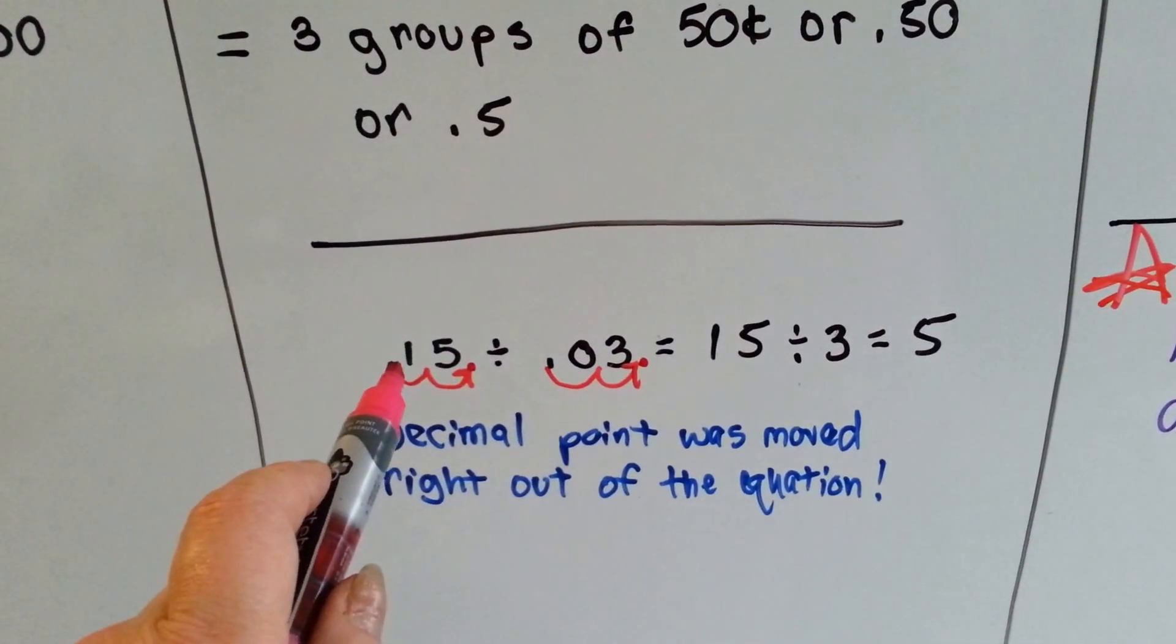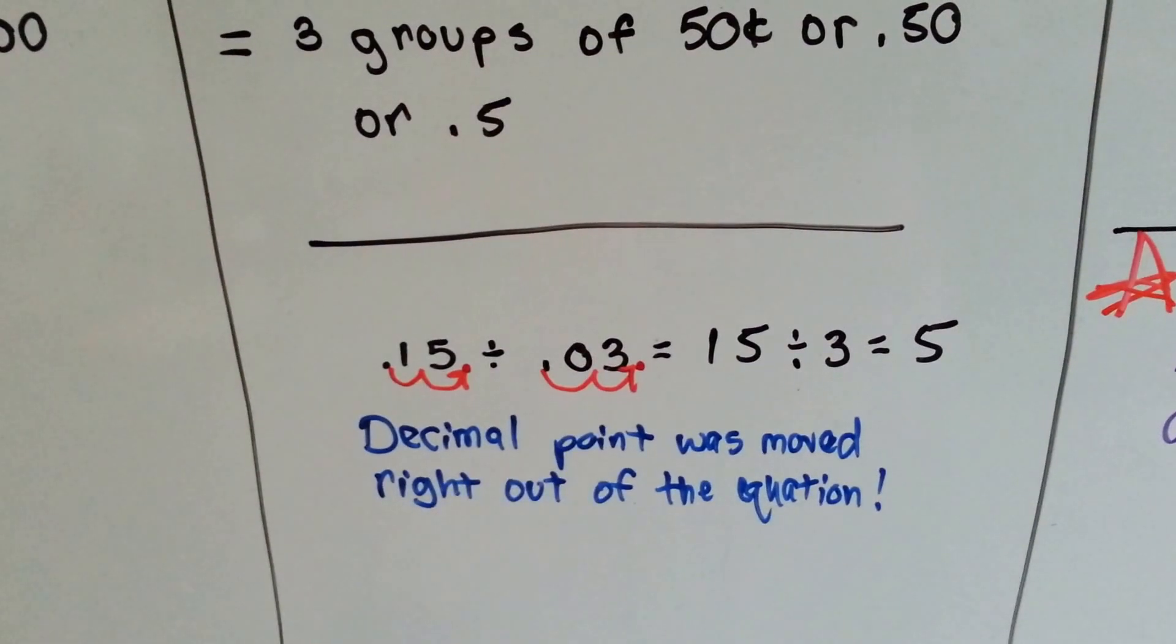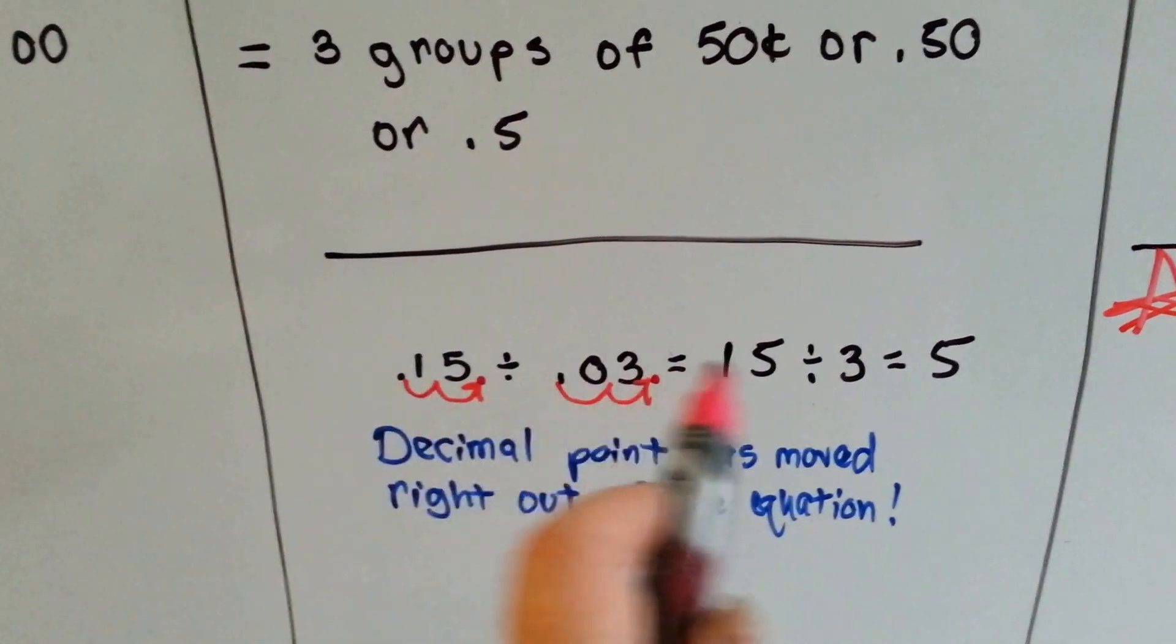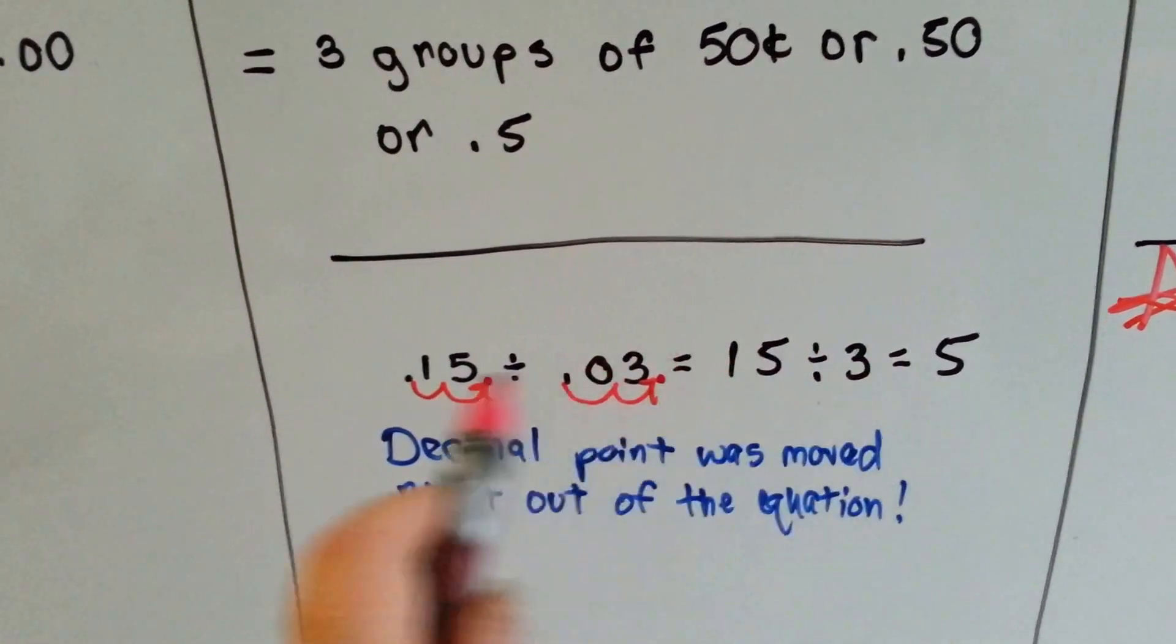What if you had 15 cents, and each person was going to get 3 cents, and you were trying to figure out how many people it could go to? Well, it would go to five people, because 3 cents times 5 is 15 cents.